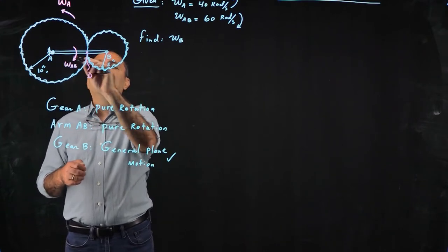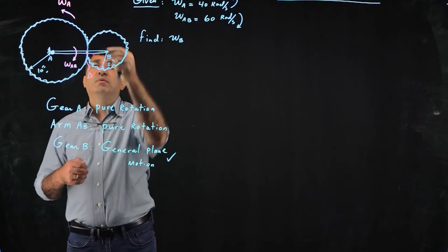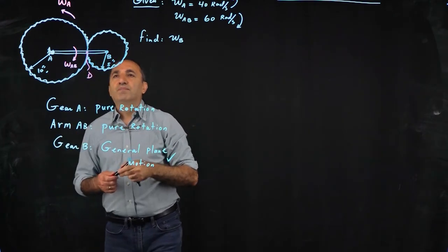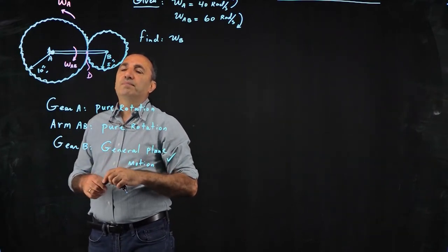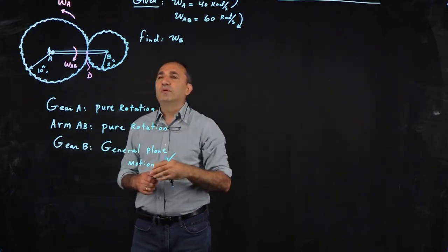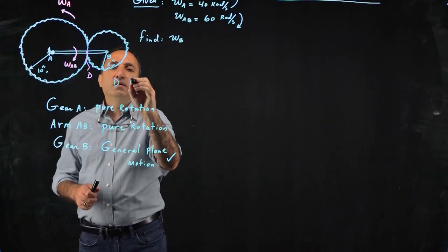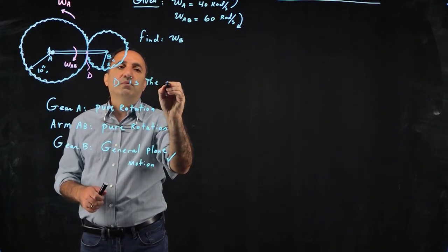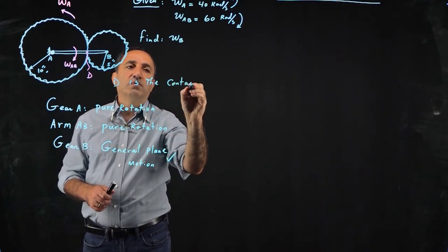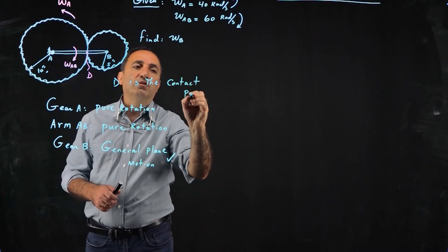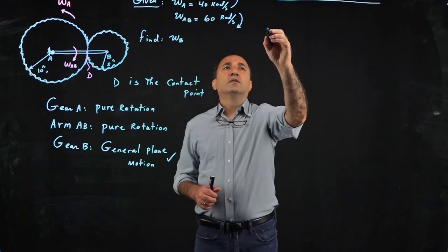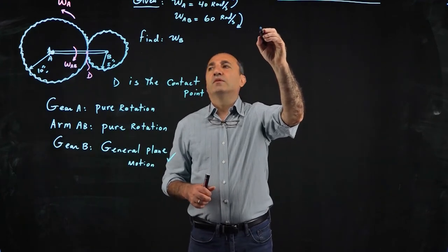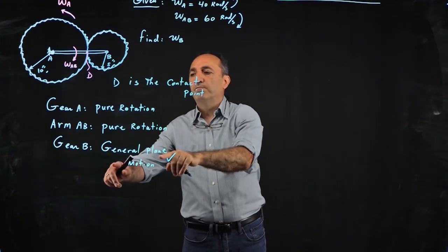By the way, D is behind, is not a point on arm AB. It's behind. If AB is in the front and D would be a point behind that, that would be the contact point. So D is the contact point between the two gears.